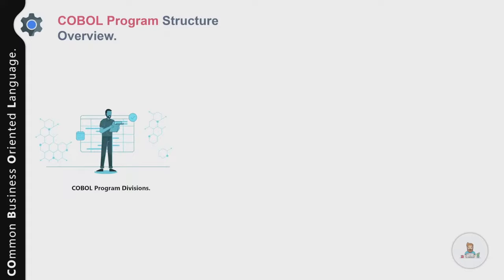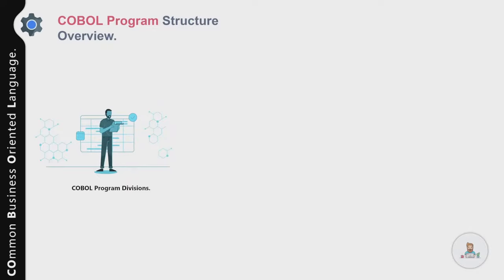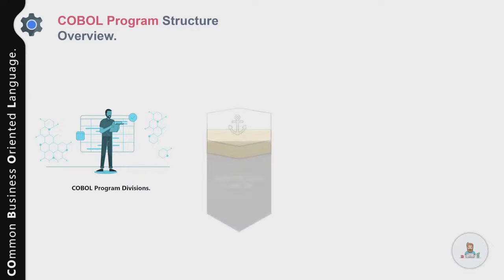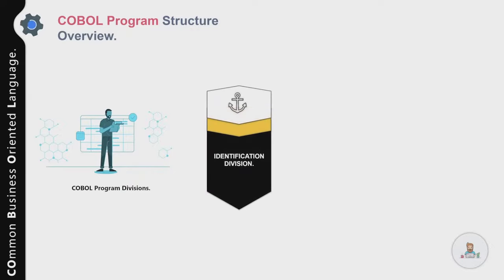Now let's talk about the overall structure of a COBOL program. COBOL is a structured programming language widely used for business-oriented applications and is far more clearly structured than any other programming language. A COBOL program is divided into four logical divisions, each further divided into sections, paragraphs, sentences, and statements. Let me explain each division, and in subsequent lectures we'll go into each division in detail.